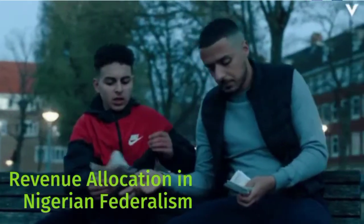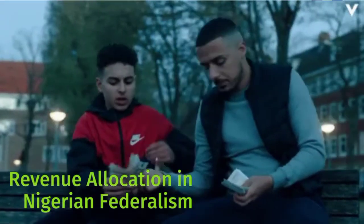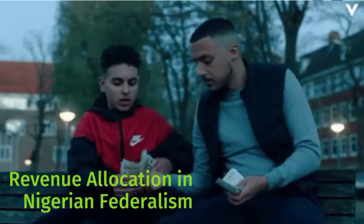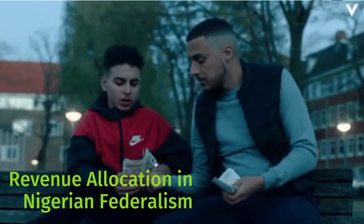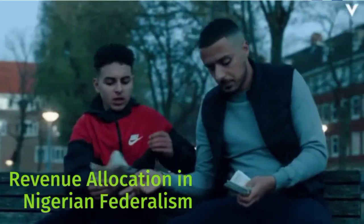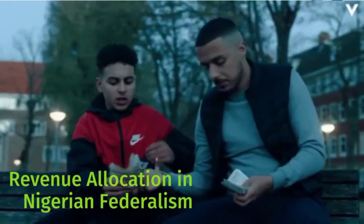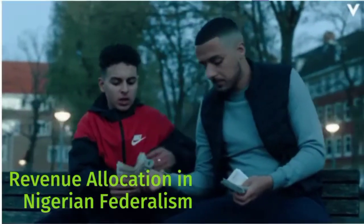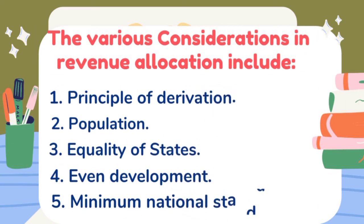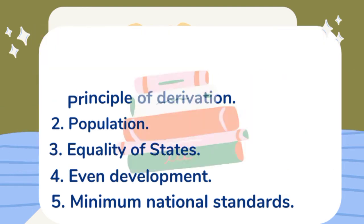Let's look at revenue allocation in Nigerian federalism. There have been many contentious issues faced in Nigerian federalism, and one that was and still remains contentious is revenue allocation — the question of how revenue should be shared in Nigeria. There have been various considerations: the principle of derivation, which explains that a large portion be given back to the area where resources were derived from; population, based on the population of certain places; equality of states to ensure even development; and minimal national standard.